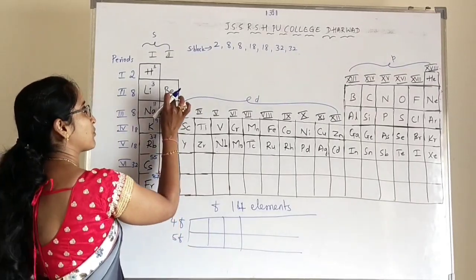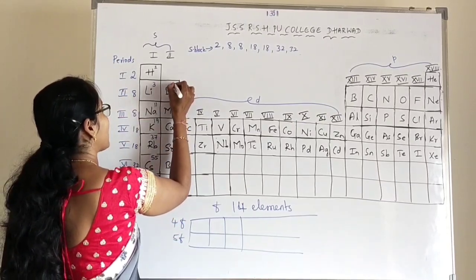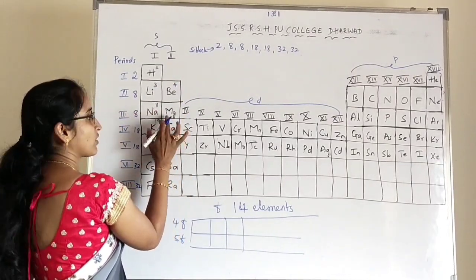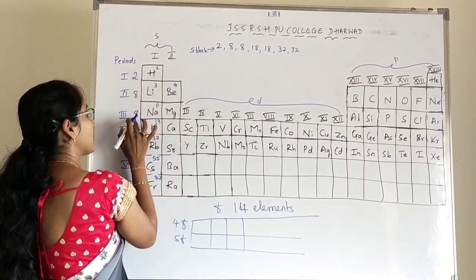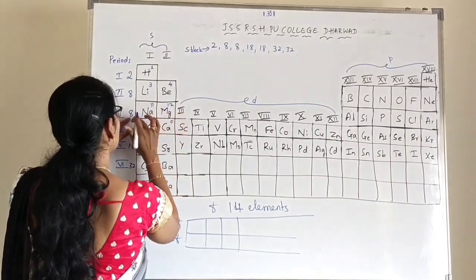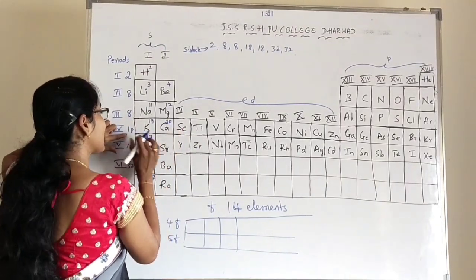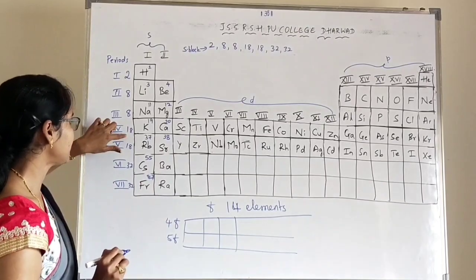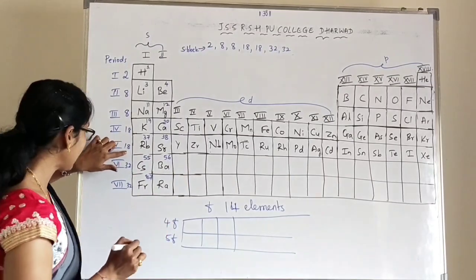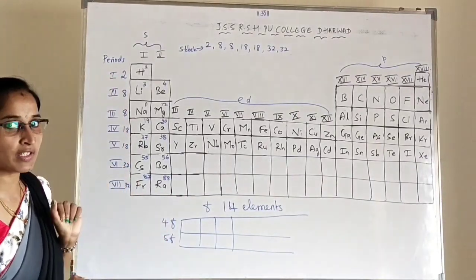For Group 2 S-block elements, beryllium has atomic number 4. Then 4+8 = 12 for magnesium, 12+8 = 20 for calcium, 20+18 = 38 for strontium, 38+18 = 56 for barium, and 56+32 = 88 for radium. This is the approach for S-block Group 2 elements.